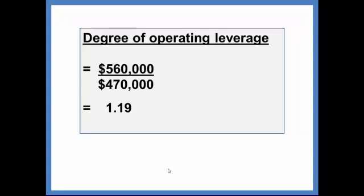Now what that means is if, say, sales increase 10%, profit would increase by 11.9%. You can refer back to a prior problem we worked to see that worked out and how this is used. This is simply the calculation. The degree of operating leverage is 1.19.